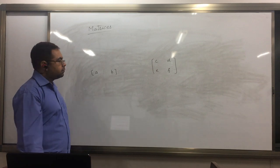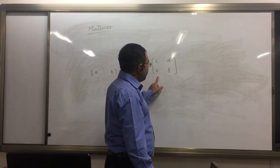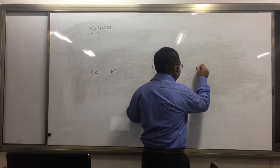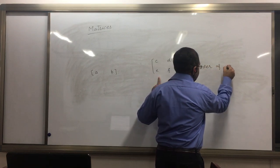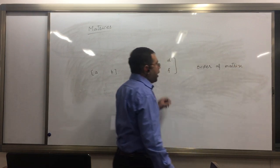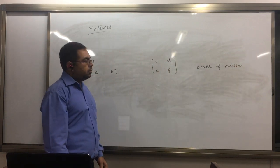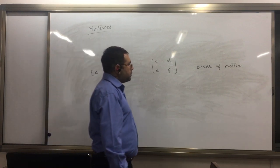And what is the order of the matrix? Order of the matrix is the number of rows into number of columns.